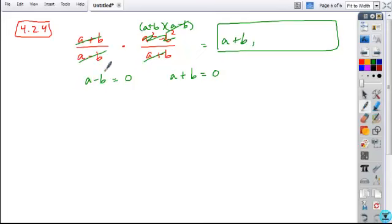So if we solve for A here, we'd add B to both sides, giving you A equals B. And here we'd subtract B from both sides, A equals negative B. So these two values, B and negative B, are the restricted values for A. So it's A not equal to negative B, B is how you would write it online.